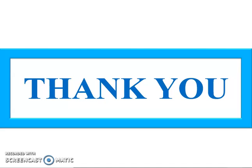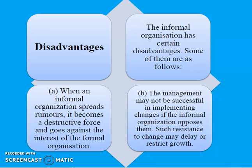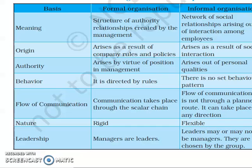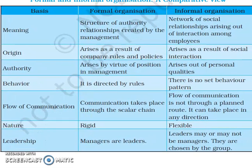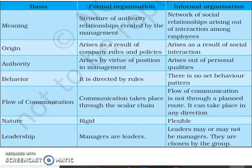On the basis of the above points, yesterday's discussion and today's discussion, there is a difference between formal and informal organization. Formal organization is created to achieve predetermined objectives, while informal organization has no predetermined objectives. Formal organization refers to well-defined authority, responsibility, and relationship, while informal organization is based on human emotions and sentiments. Formal relations are well-planned and created deliberately, whereas in informal organization, relations originate automatically.